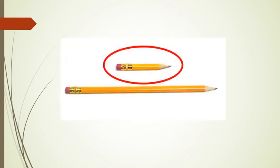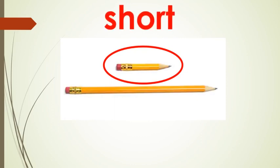You can see two pencils here. One yellow pencil is long. Another yellow pencil which is circled with red — that is short. You can read the word here. It begins with the 'Sh' sound. Short. Please repeat after me — Short.